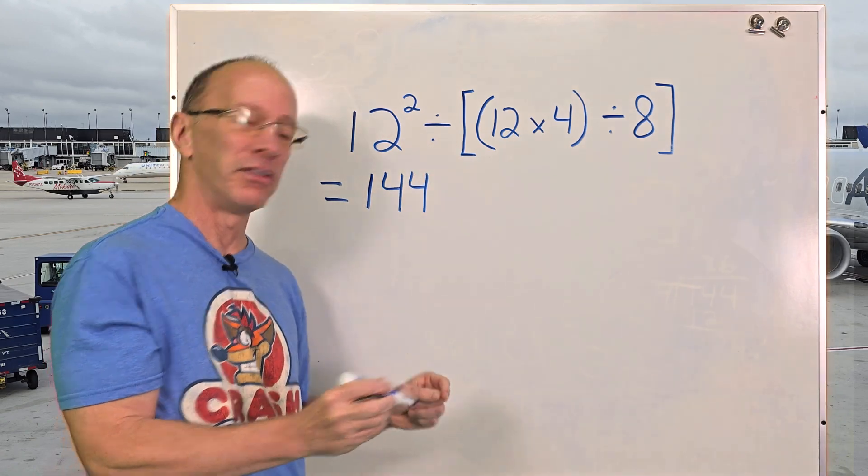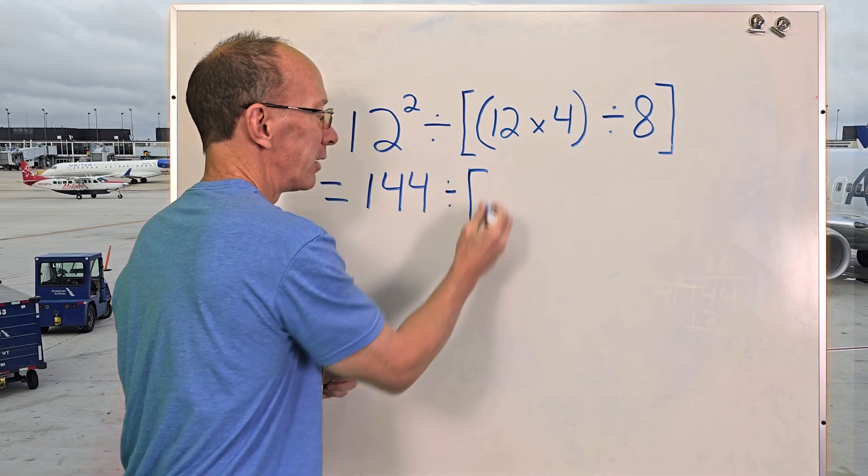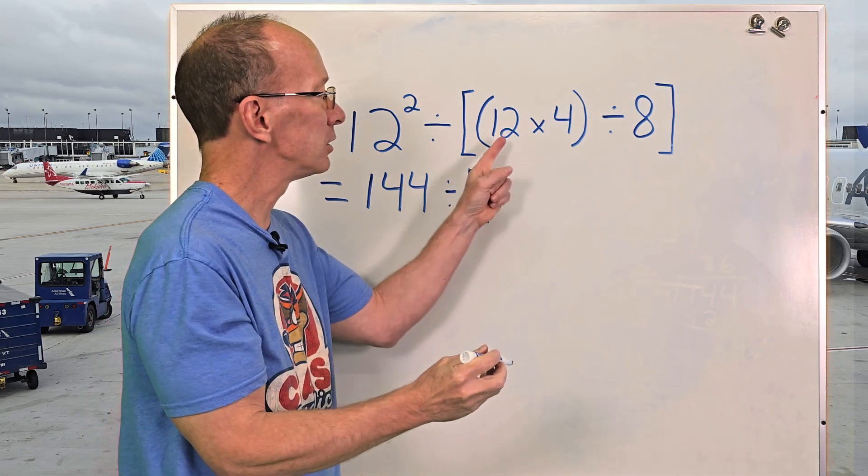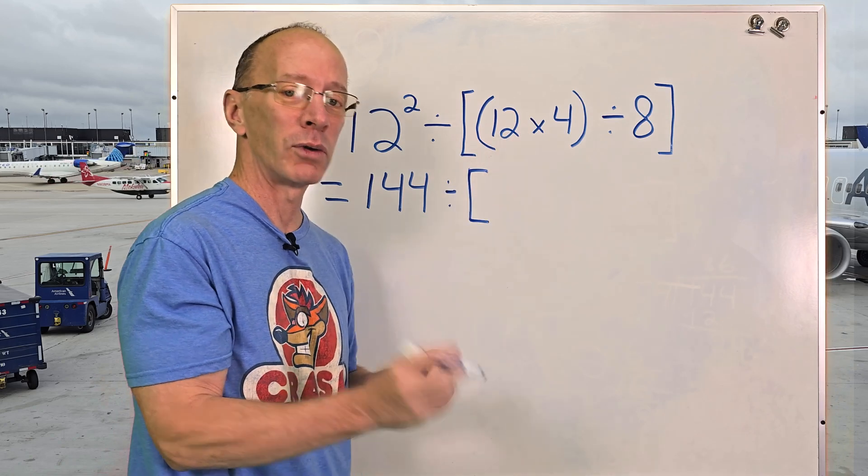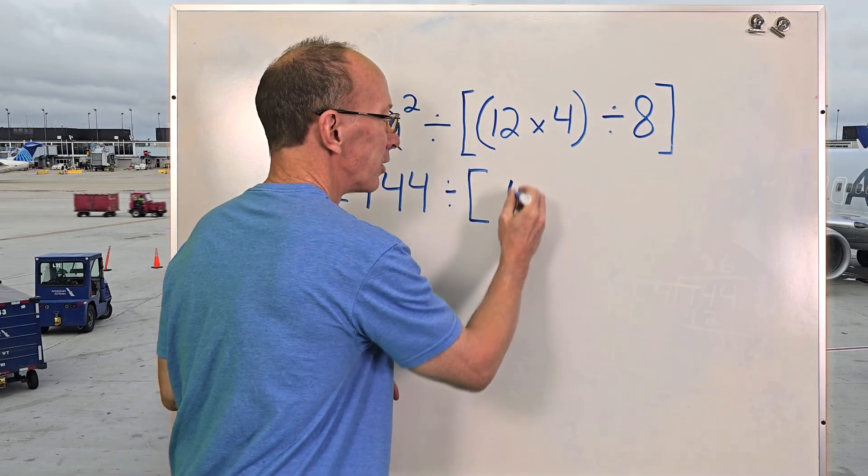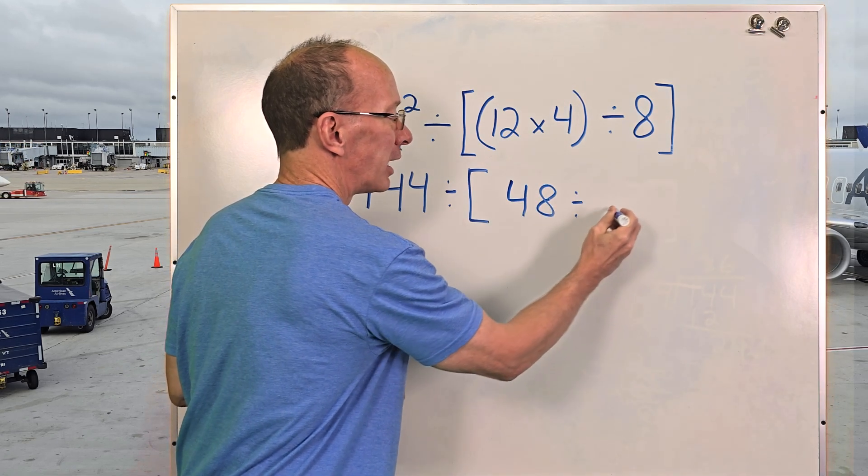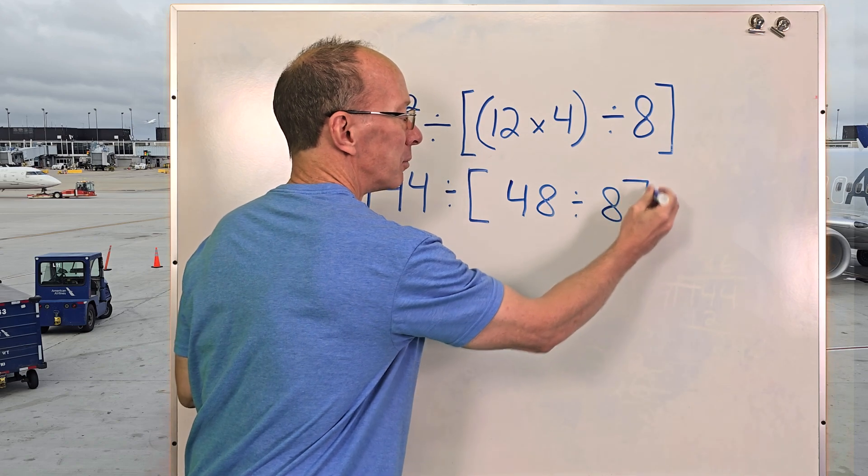I'm going to keep my division symbol right there, then my bracket, and then 12 times 4. What is 12 times 4? Yeah, you got it, 48. So I'm going to write 48 right there, then divided by 8, and then my bracket here.